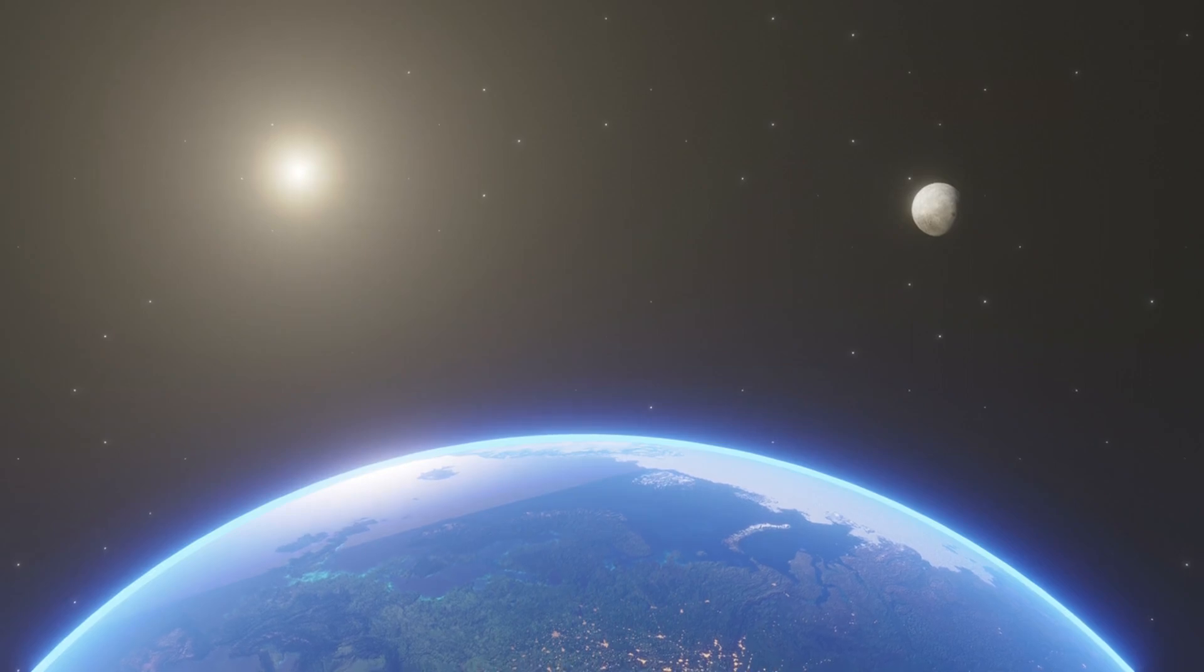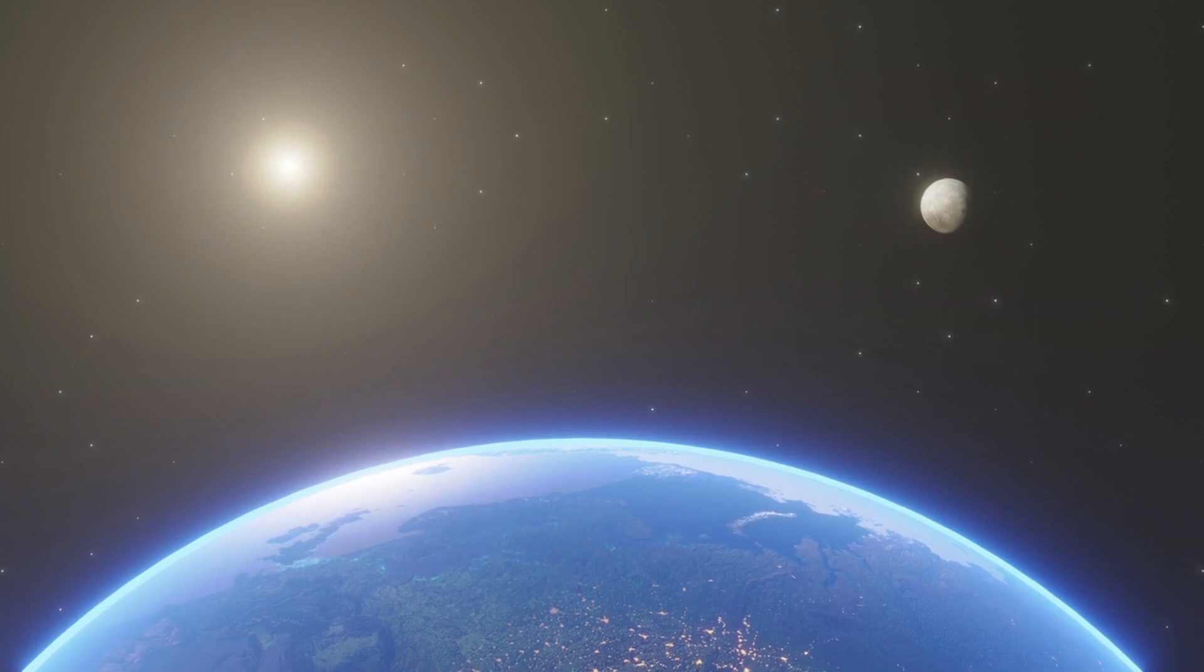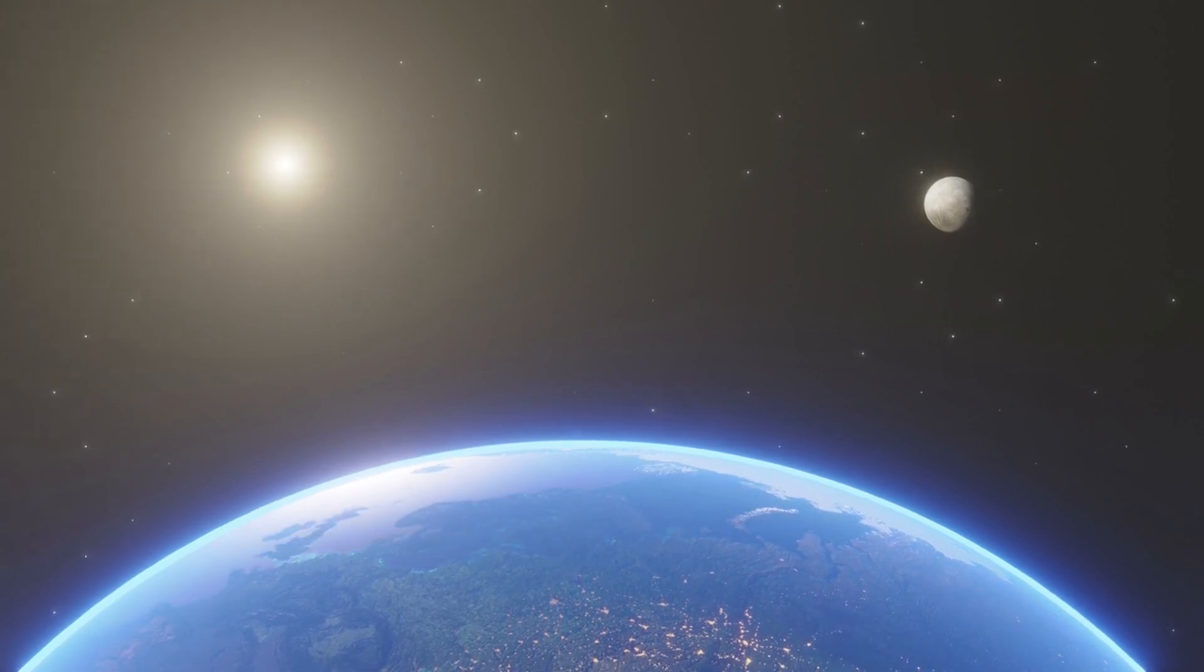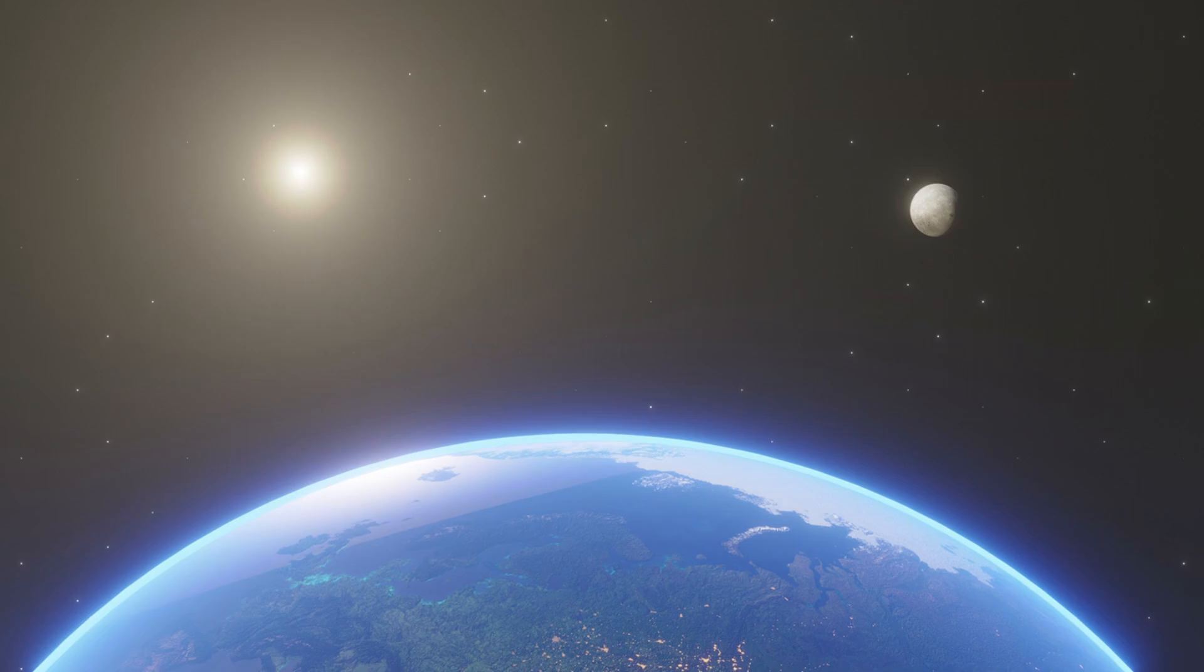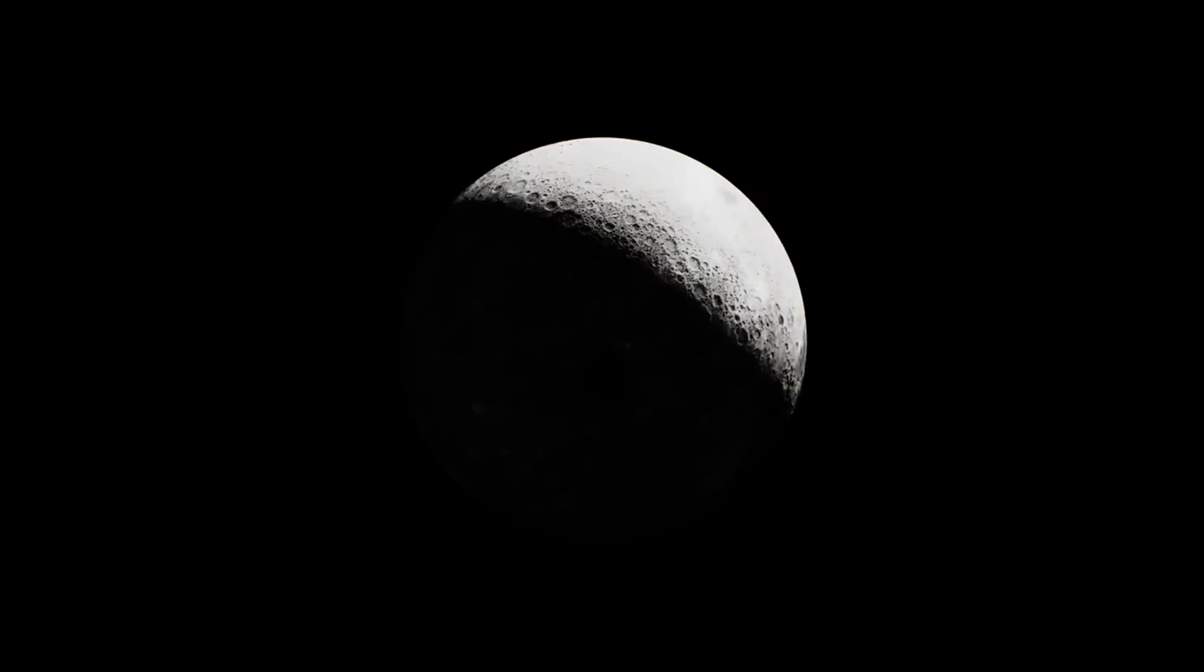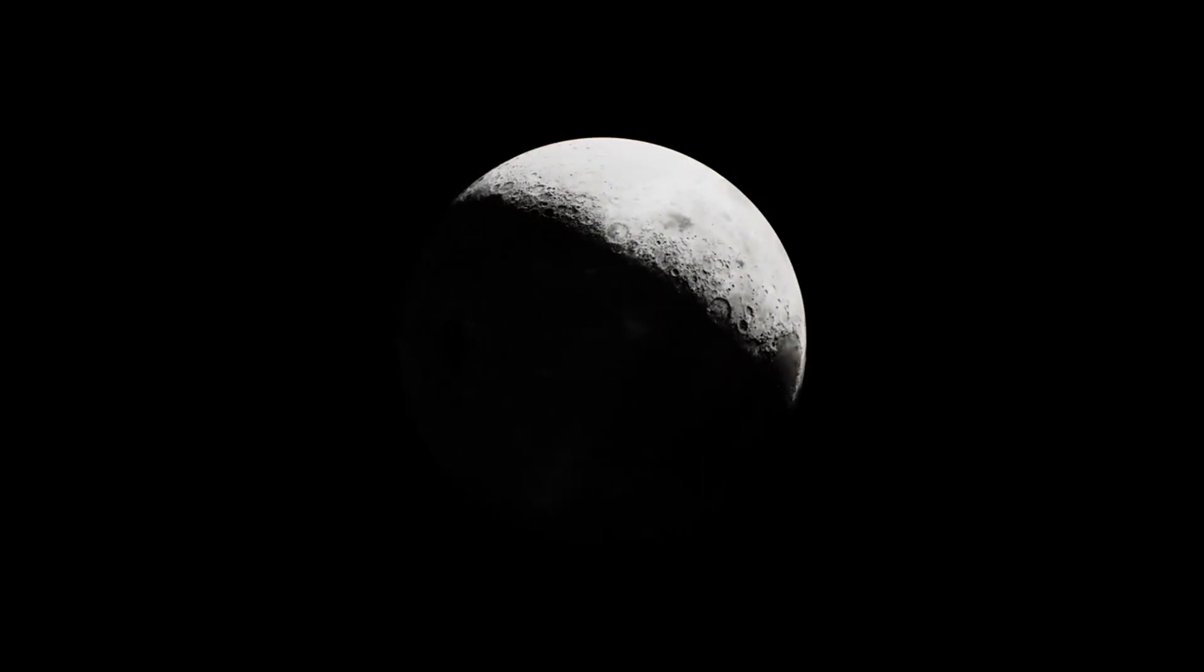These differences extend beyond surface appearance. Researchers have discovered that the moon's far side has a significantly thicker crust than its near side, which is enriched with unusually high concentrations of radioactive elements like thorium, potassium, and rare earth metals. This enrichment, part of the so-called creep terrain, remains a subject of debate.